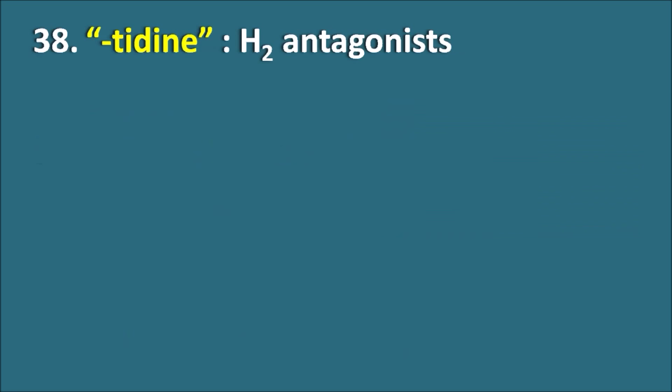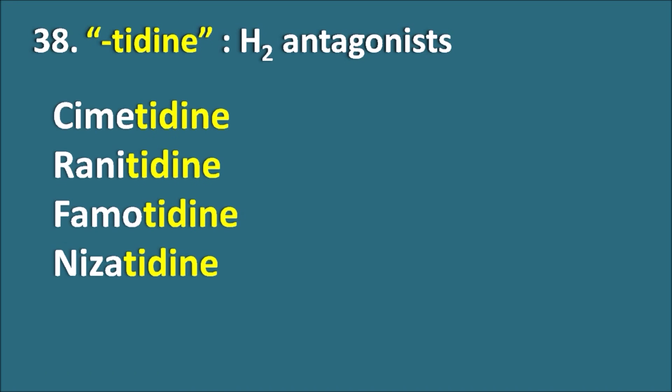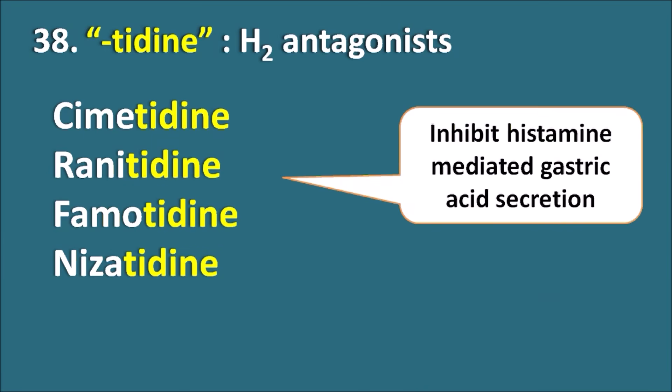Thirty-eighth, the suffix '-tidine' indicates they are H2 antagonists. Drugs like Cimetidine, Ranitidine, Famotidine, and Nizatidine are all H2 antagonists. These drugs inhibit histamine-mediated gastric acid secretion, and thereby can be used as anti-ulcer agents.